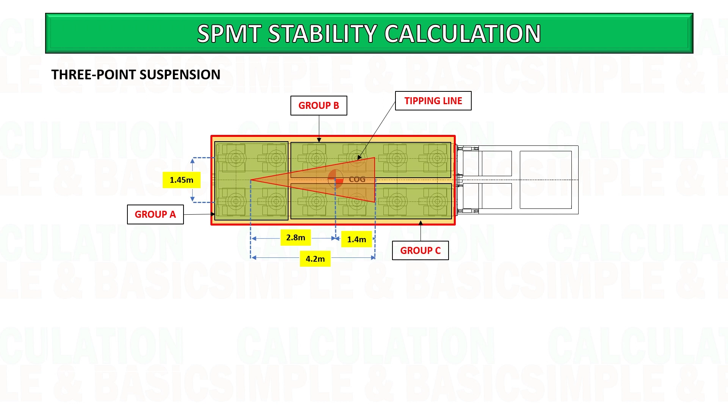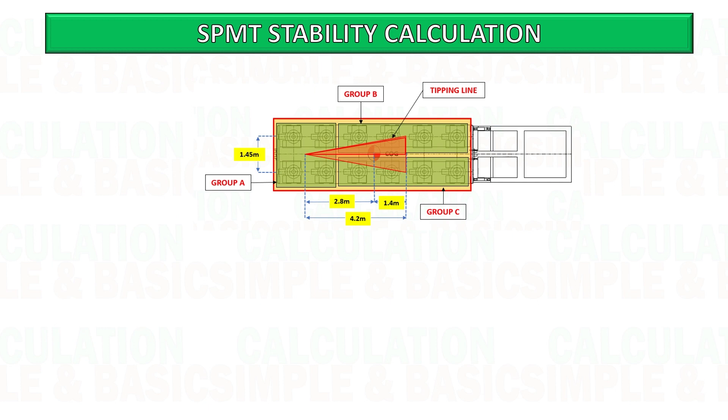In each grouping it consists of two axle lines. See the below figure. After getting the stability triangle we can start to calculate the stability on tipping.